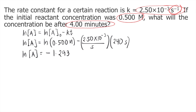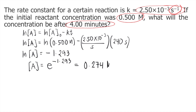To get rid of the Ln and solve for the final concentration, we take E raised to whatever is on the other side. So E raised to negative 1.293 equals 0.274. Since this is the final concentration, the unit is molar. The answer to this question is 0.274 molar.